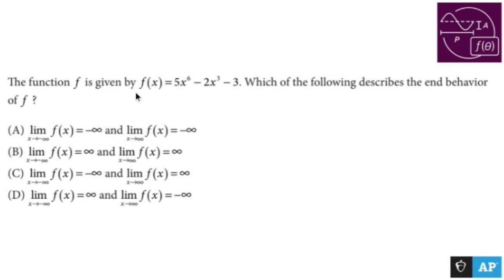The function f is given by f(x) = 5x^6 - 2x^3 - 3. Which of the following describes the end behavior of f?